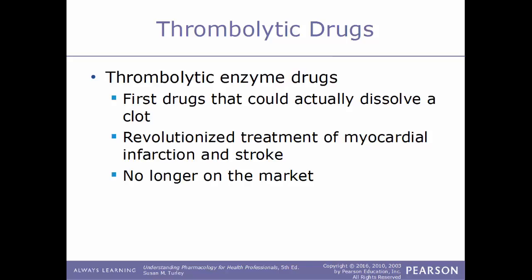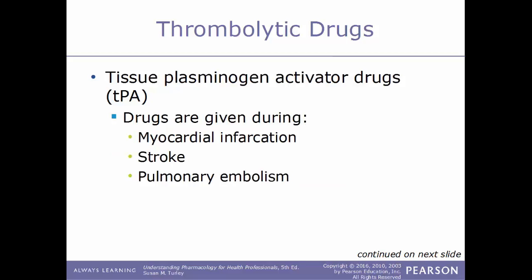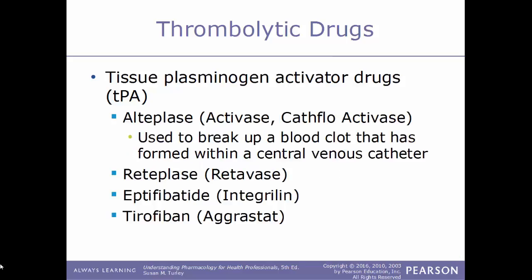Thrombolytic enzyme drugs were the first drugs that could actually dissolve a clot and revolutionized the treatment for myocardial infarctions and strokes, but these are no longer on the market. Another type of thrombolytic drug are TPAs — tissue plasminogen activators — created using recombinant DNA technology. Their action is essentially the same as thrombolytic enzyme drugs. These drugs are given while a patient is going through a myocardial infarction, a stroke, or a pulmonary embolism, to dissolve a blood clot that has already formed within the coronary arteries, arteries of the brain, or the lung. Examples of TPAs include alteplase, also known as Activase or Cathflo Activase, used to break up blood clots formed within a central venous catheter.